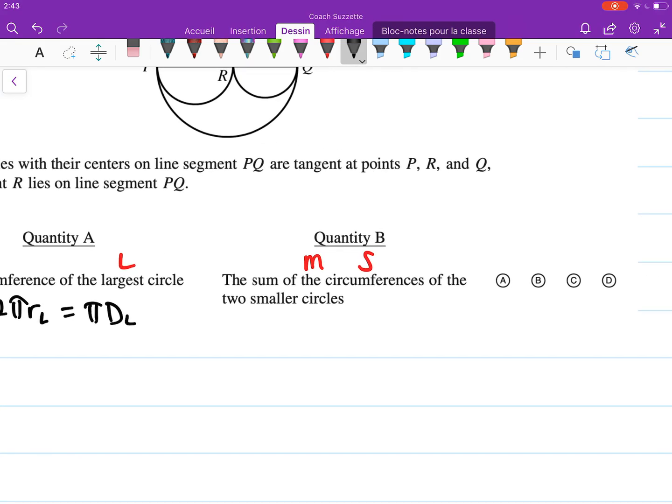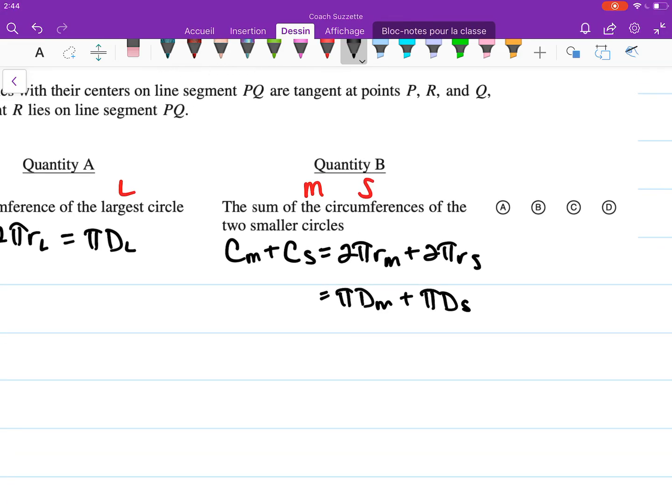The sum of the circumferences of the two smaller circles means the circumference of the medium plus the circumference of the small. That's 2πr_m plus 2πr_s, or we can say π times d_m plus π times d_s. We can factor out the common π, leaving us with π times (d_m plus d_s).